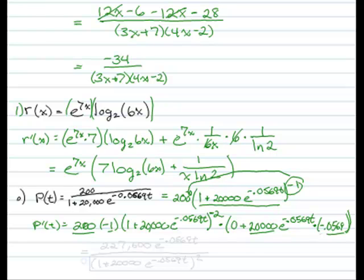There's a negative here and a negative here, so it'll come up positive. So that'll give us 227,600, e to the negative 0.0569t. And if we wanted to, we could write it as over 1 plus 20,000, e to the negative 0.0569t, that whole quantity squared. That's about as simplified as we're going to get.